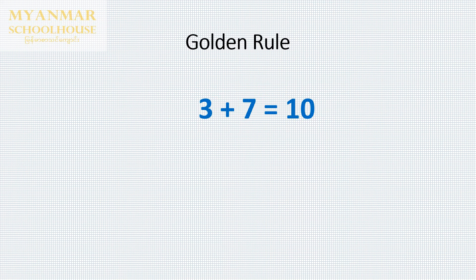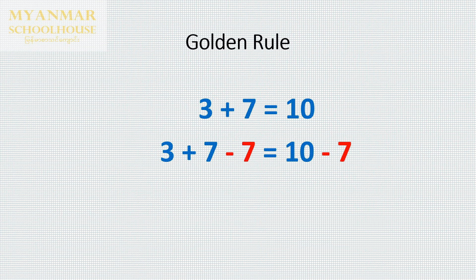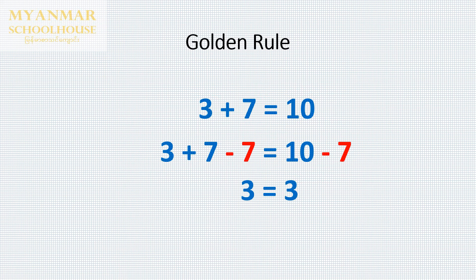3 plus 7 equals 10. The first equation has rules from the determinant. The second equation has limits, with the two equations of equation 1.